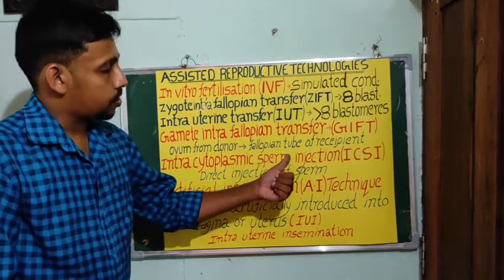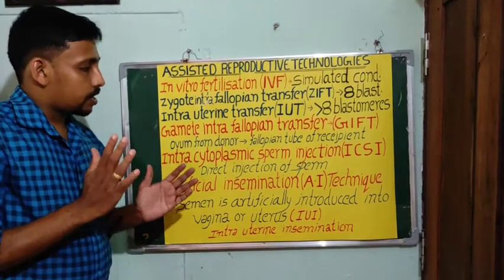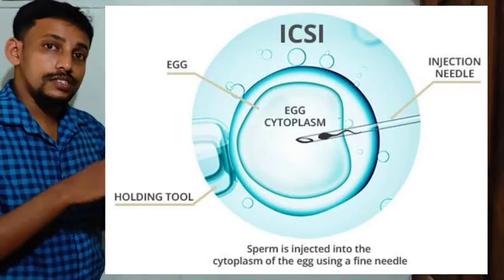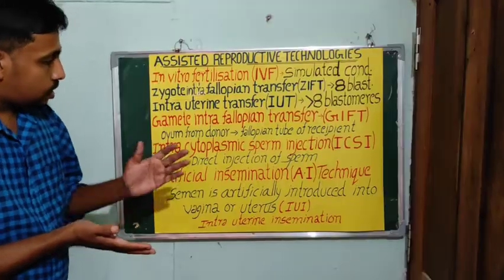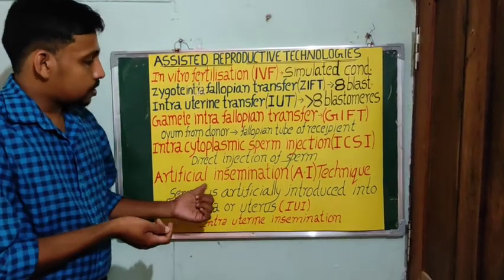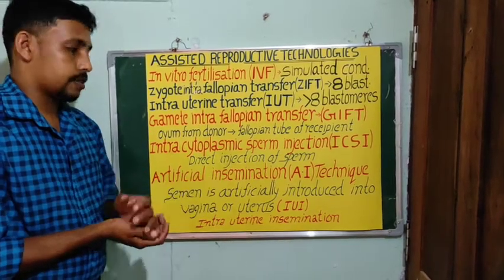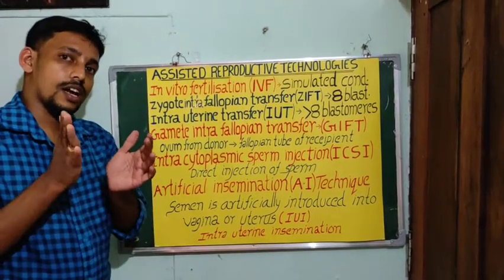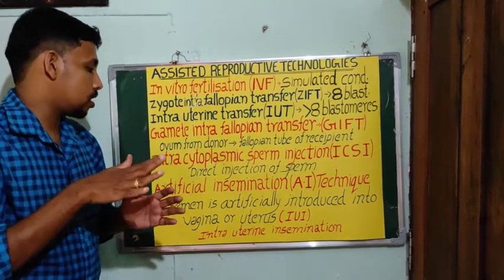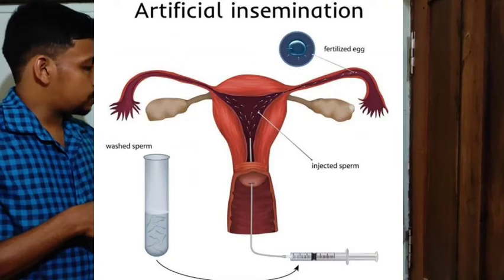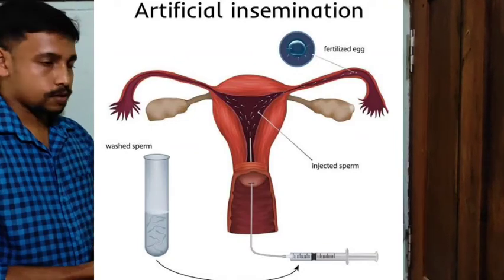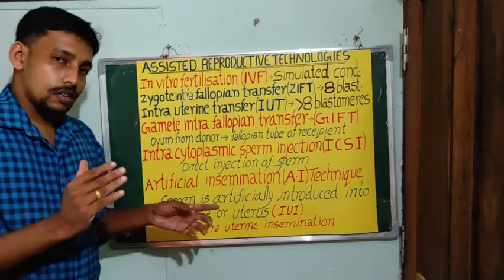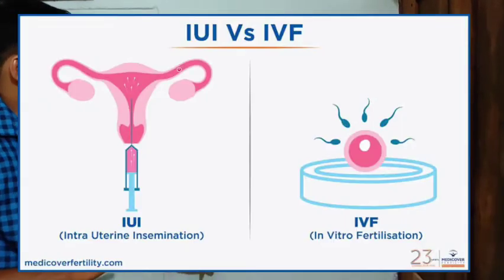The next technology is intracytoplasmic sperm injection or ICSI, where the sperm is directly injected into the ovum inside the laboratory. The last technique is artificial insemination or AI, where semen collected from the husband is artificially introduced either into the vagina or into the uterus of the female. If introduced into the uterus, the technique is known as intra-uterine insemination.